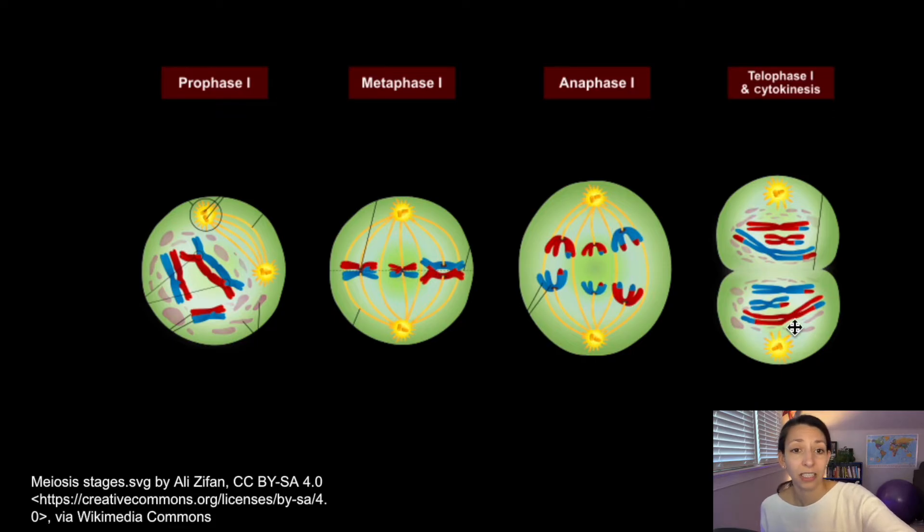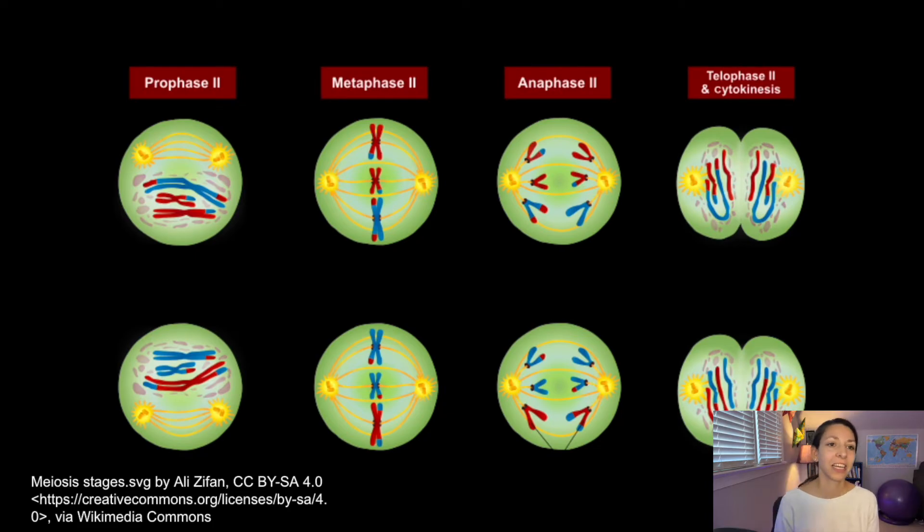Remember, at this point, sister chromatids are still attached. We have to separate them in the next part of meiosis. So in meiosis 2, we have two rows here because we have two cells already. And remember, we're going to end up with four cells. So we have to undergo this division again.